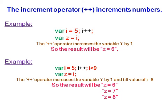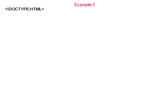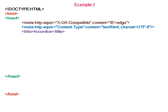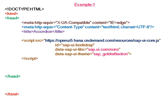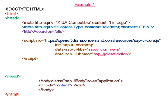So the result will be z equal to six, z equal to seven, and z equal to eight. In this example, we will create an accordion when the theme selected is Gold Reflection. In the body section, there is a div element with id 'content'.